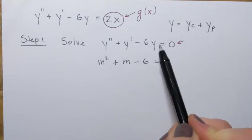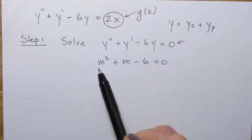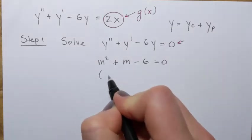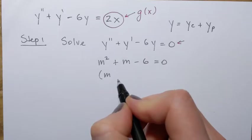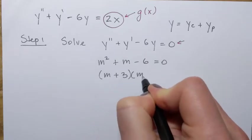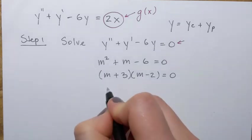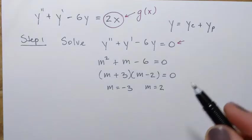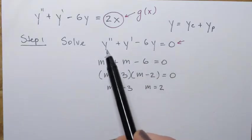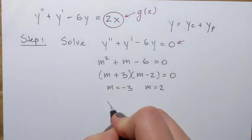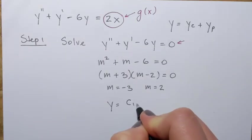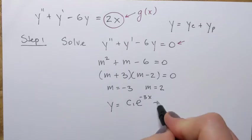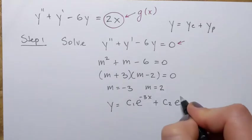Since it's a second-order homogeneous differential equation, we obtain a quadratic characteristic equation. We can quickly solve by factoring: that's going to be (m plus 3)(m minus 2) equals 0. From here we have m equals negative 3 and m equals positive 2. That means the general solution to the homogeneous equation is y equals c1 times e to the power negative 3x plus c2 e to the power 2x.